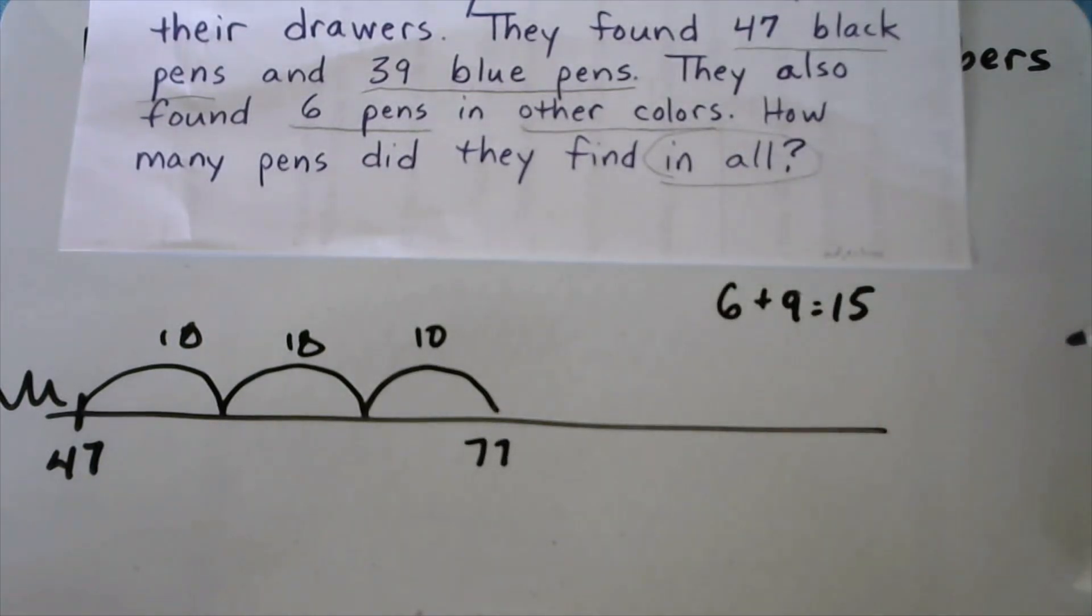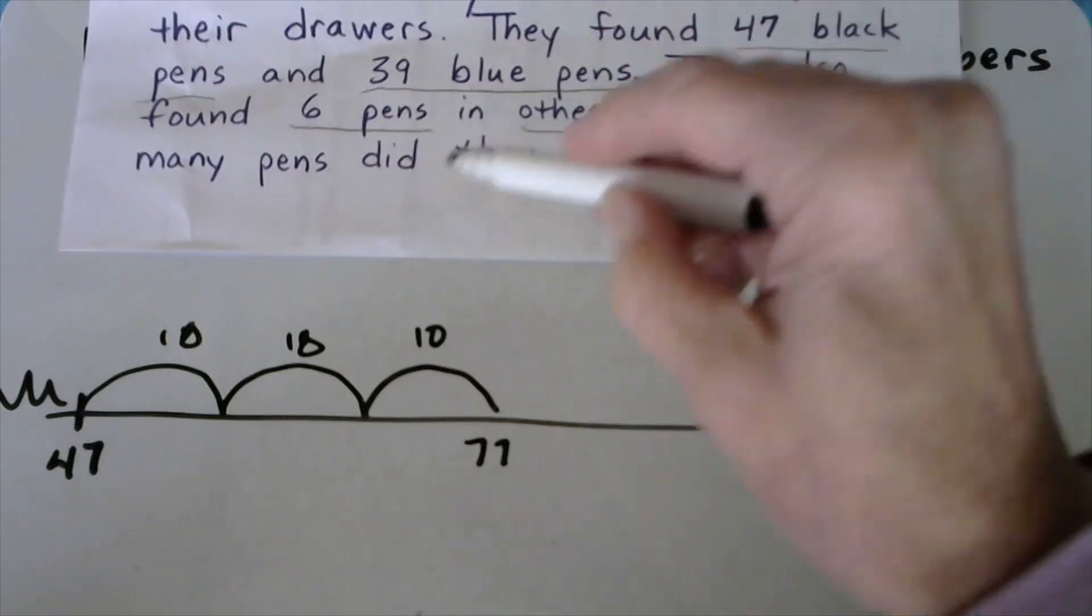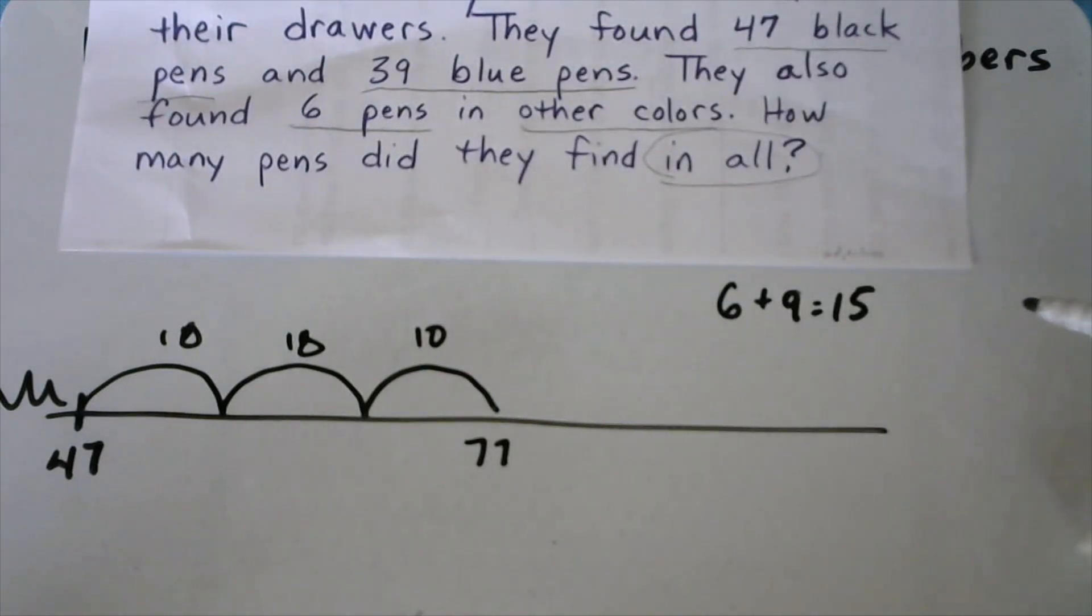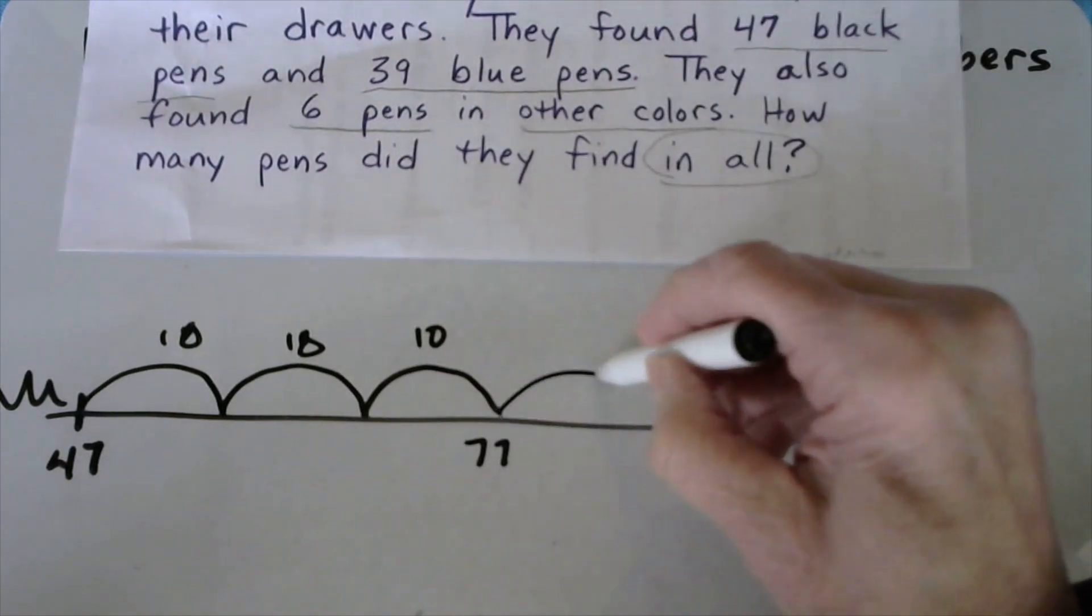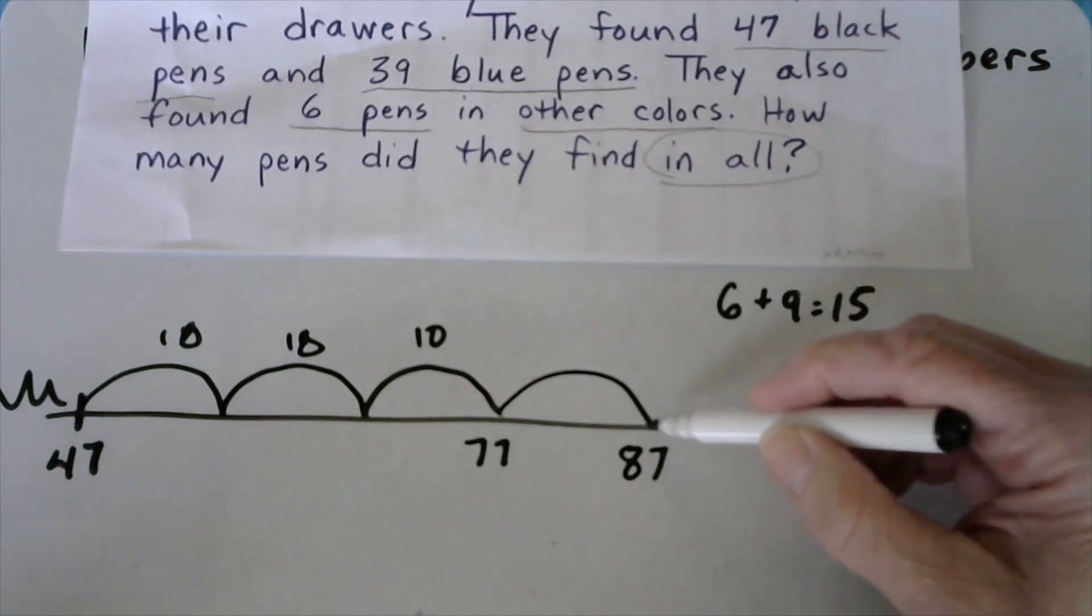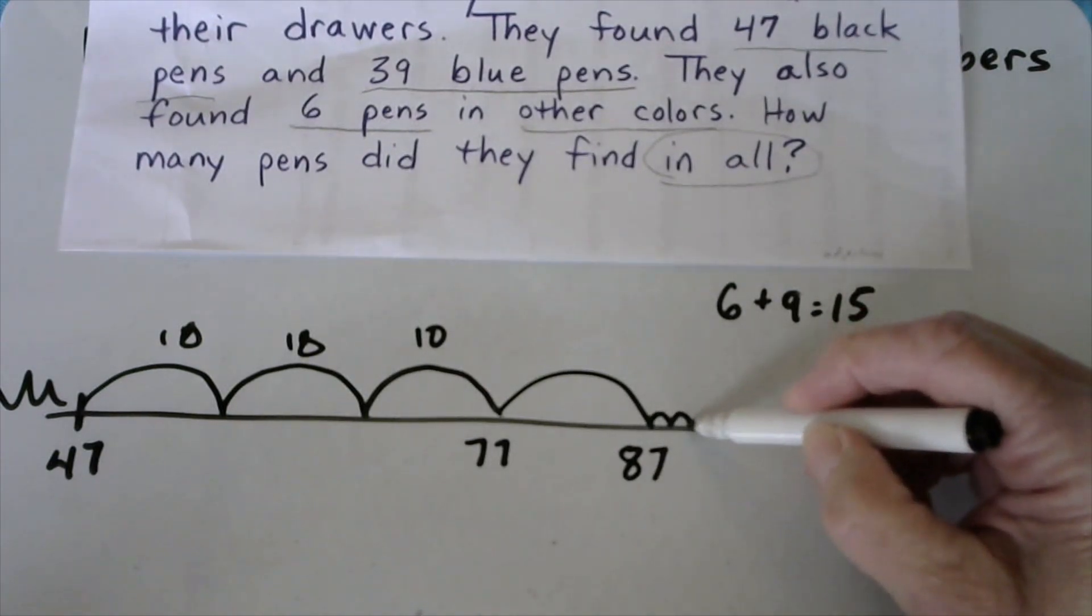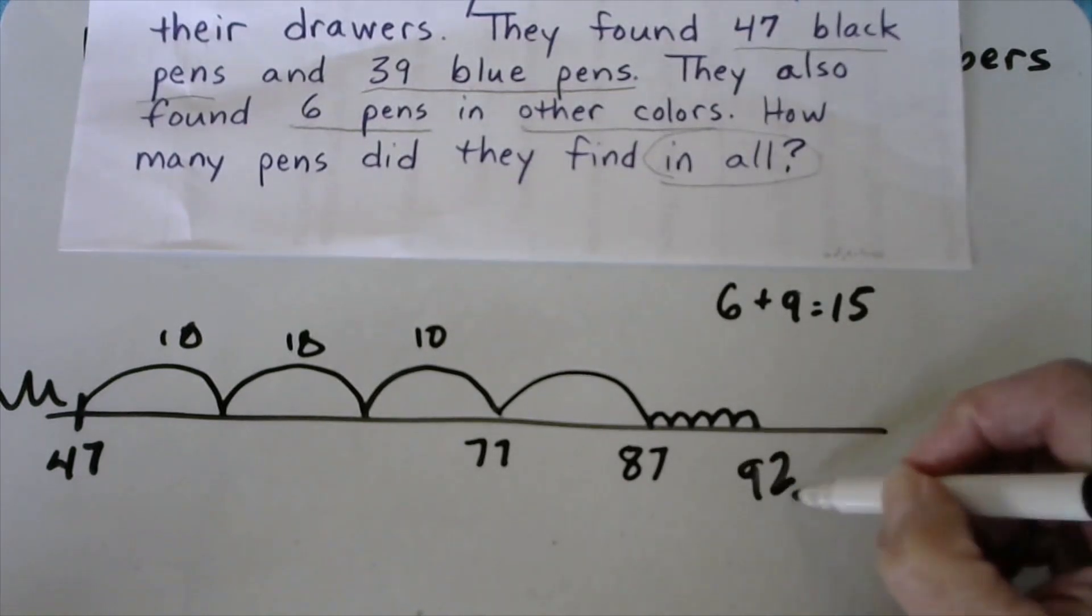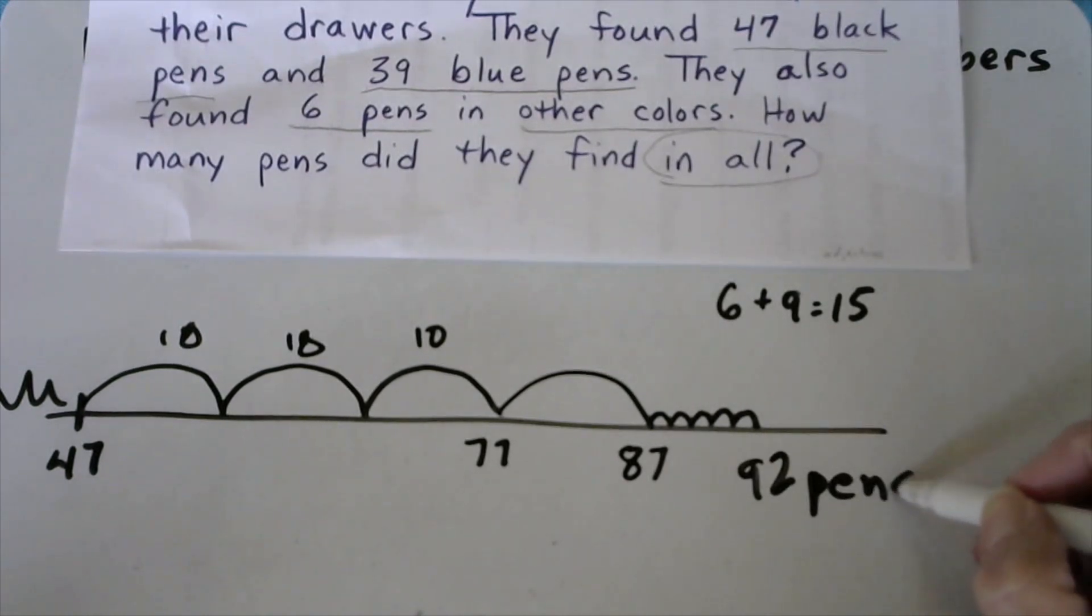So 6 plus 9 equals 15. Now I know I just need to jump 15 more. That lets me do a jump of 10 and then just 5 little jumps. So I'm going to jump 10 more, 87, and now I've got to jump the 5 ones. 88, 89, 90, 91, 92, and always the unit, 92 pens.